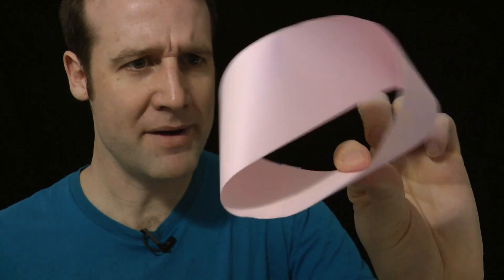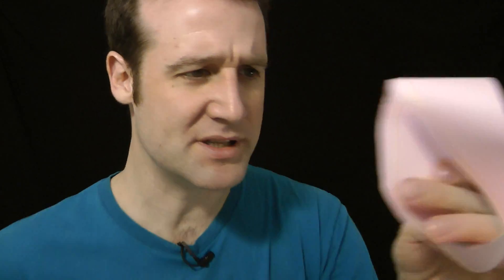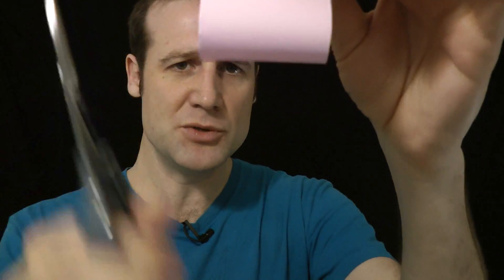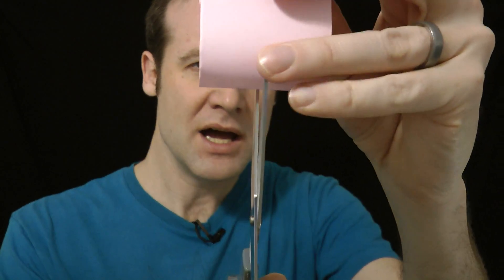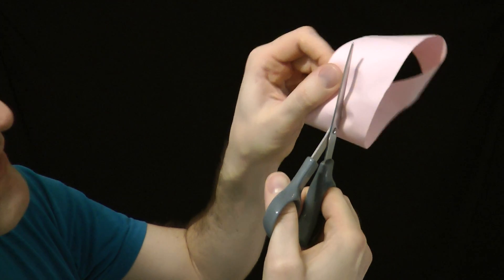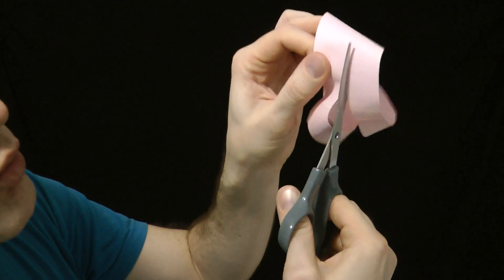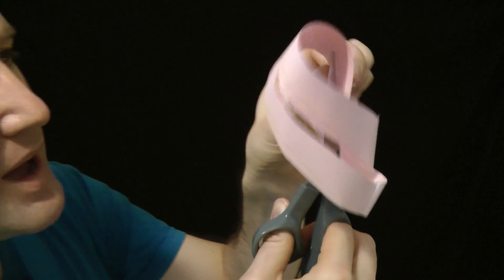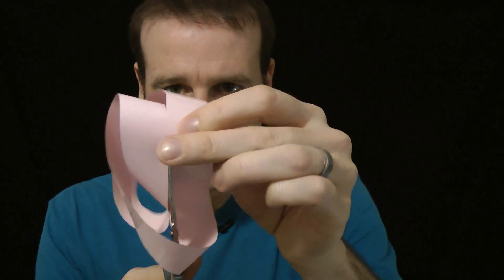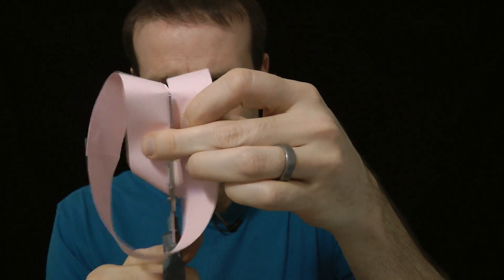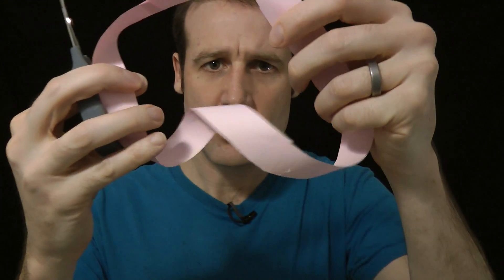For our romantic maths arts and crafts project we actually need two Mobius Loops, and the easiest way to do that, you can see I've used paper which is reasonably wide, I can make a little snip in the center there, now I can take my scissors, and I can very carefully cut all the way around, right down the center, and when I get back to where I started, I will have two Mobius Loops that are both exactly the... what?